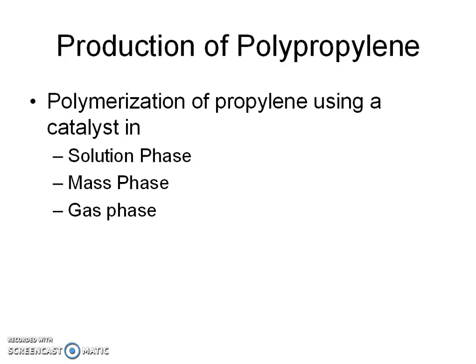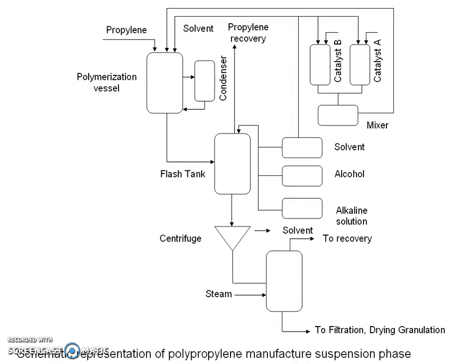Polypropylene is produced by polymerization of propylene using a catalyst in solution, mass, or gas phase. This slide shows the schematic representation of polypropylene manufacture in suspension phase.